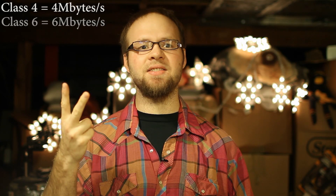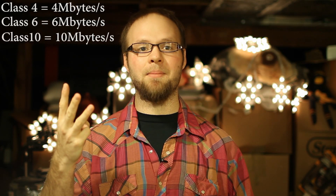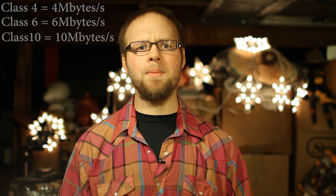A class 4 card is 4 megabytes per second, a class 6 is 6 megabytes per second, and a class 10 is 10 megabytes per second. The other thing to remember is that the T2i has a variable bit rate. So the more motion that's going on, the higher the data rate. So a class 4 or a class 6 card might keep up while the camera is stationary, but as soon as you start swinging it around, the data rate's gonna go up and you might over-exert the card.